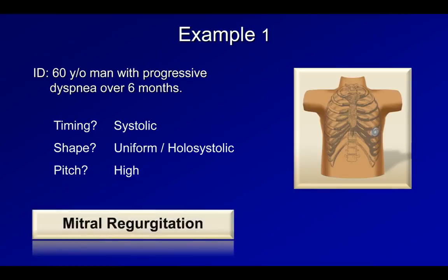What's the most likely diagnosis? Mitral regurgitation. [audio clip] I also think it's important to point out what this murmur sounds like elsewhere on the chest wall. Here is this patient's heart as heard at the right upper sternal border — listen to the changed intensity as well as the changed intensities of S1 and S2. [audio clip] And once more here at the apex. [audio clip]